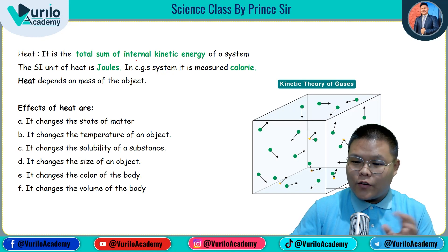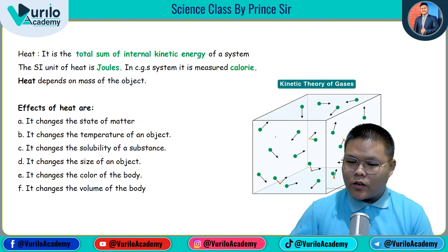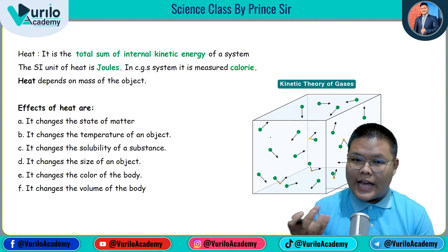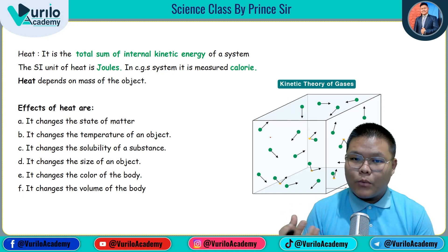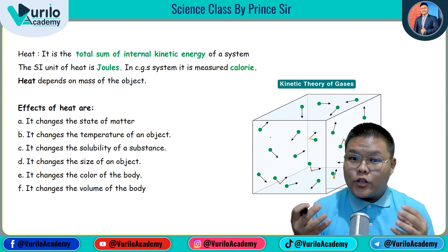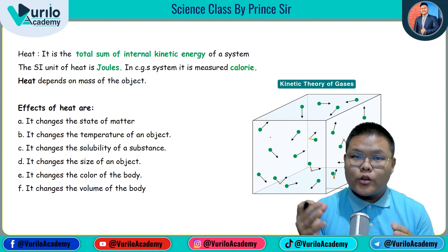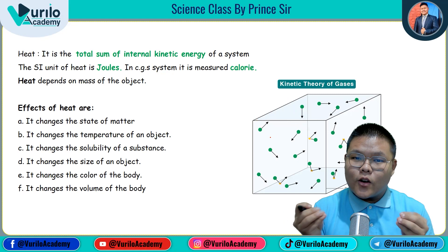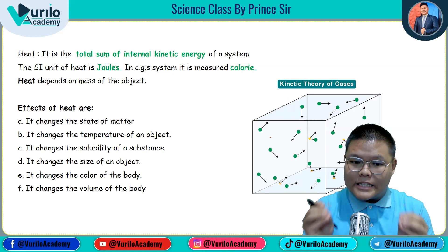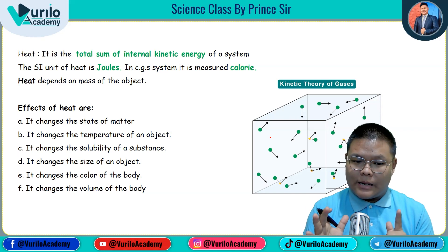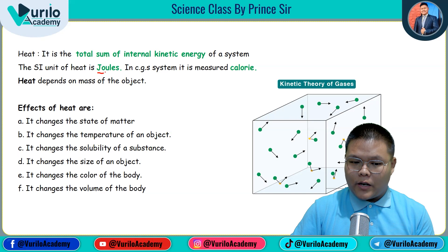internal kinetic energy of a system. Here we have to consider the gas molecules shown by the green color dots — they are in random motion due to internal kinetic energy. So for each molecule we have internal kinetic energy, and when we take the total sum of all, that is what we call heat. You can write this definition in the exam. The unit of heat is Joule.